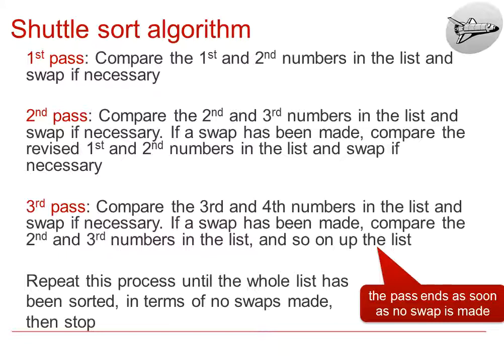Similarly, in the third pass, we start with comparing the third and fourth numbers, and work our way back to the third and second, and the second and first as necessary. Note, however, that the pass ends as soon as a no swap is made. We repeat this process until the whole list has been sorted in terms of no swaps made, or no further elements in the list to be compared, and then we stop.